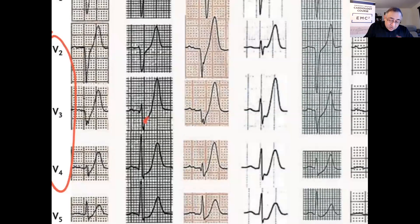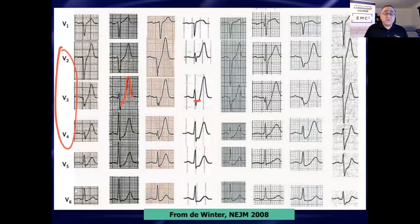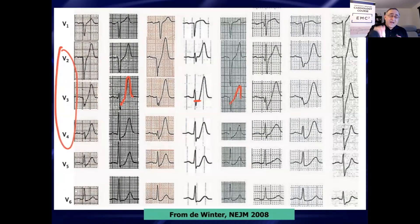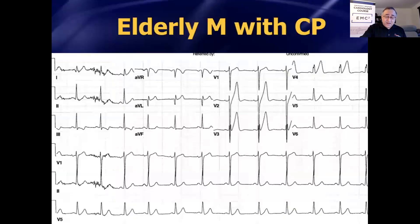What you'll notice: ST depression, often upsloping but it can also be horizontal — typically upsloping ST depression shooting into big, tall, symmetric T waves. This is not just normal hyperacute T waves, because normal hyperacute T waves don't have ST depression. These are ST depression shooting into big, tall, symmetric T waves. When you see that in the mid-precordial leads in a symptomatic patient, that's the de Winter T wave pattern — that patient is going to turn into a big anterior STEMI if you sit on it and don't do something about it.